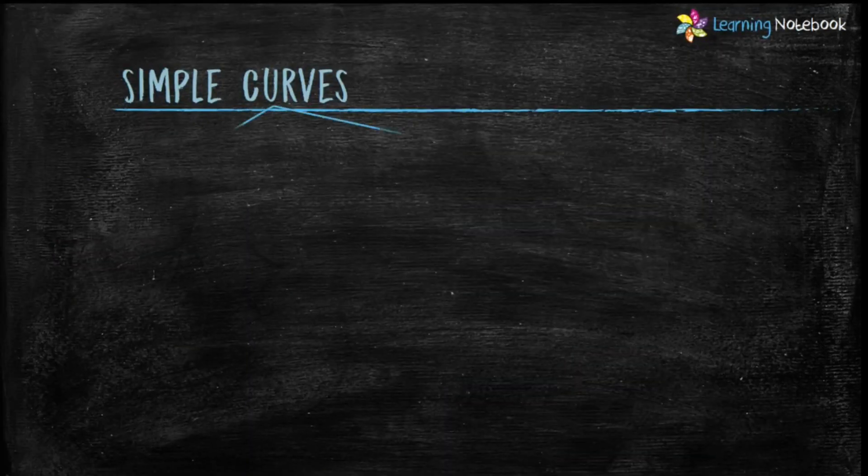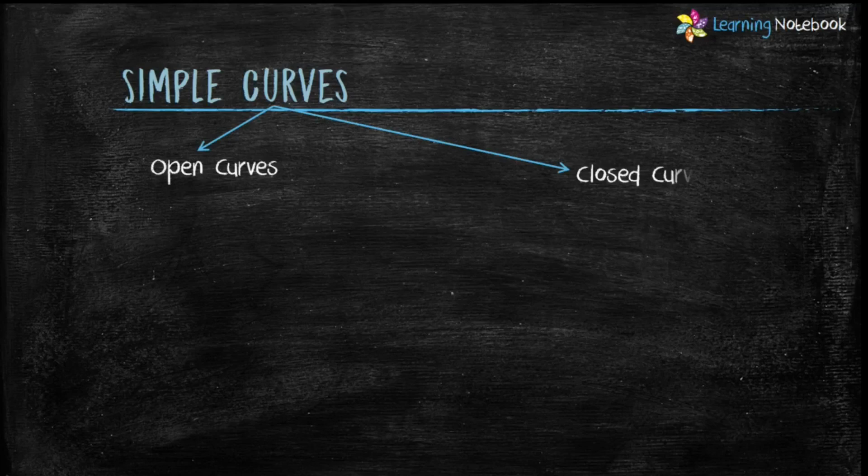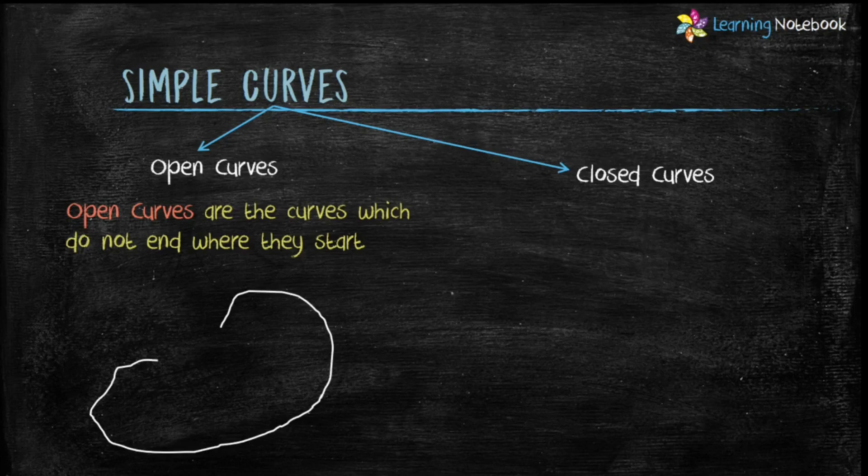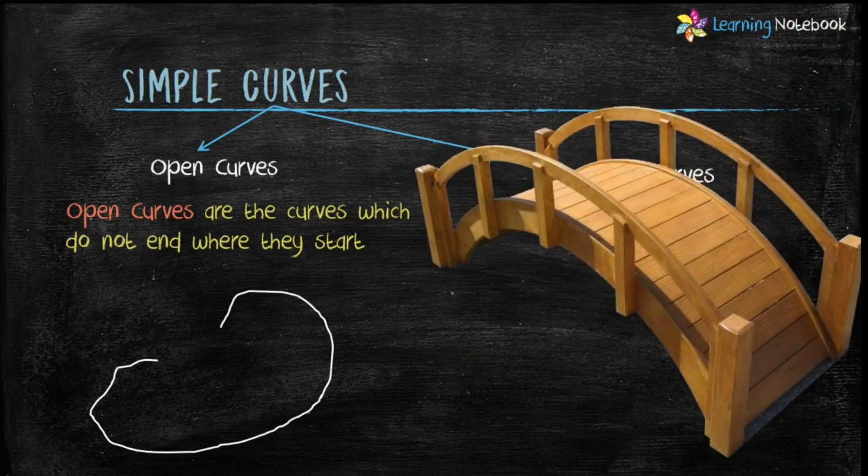Simple curves are of 2 types. Open curves and closed curves. Open curves are the curves which do not end where they start. For example, curve of a bridge is a perfect example of an open curve.